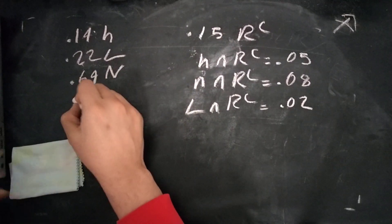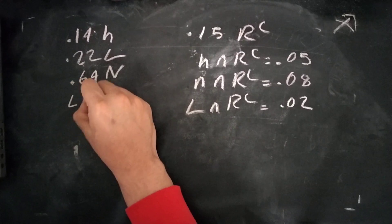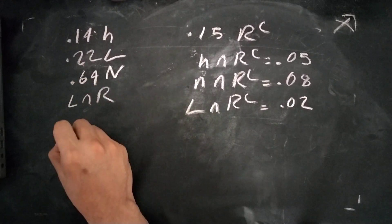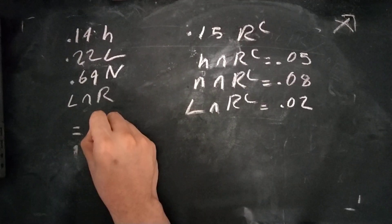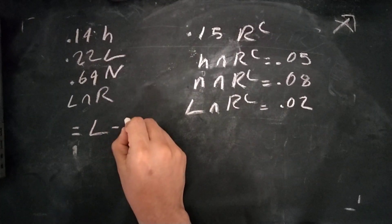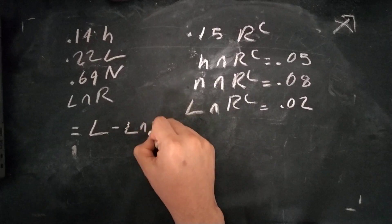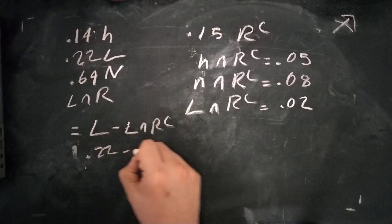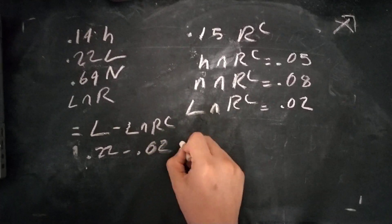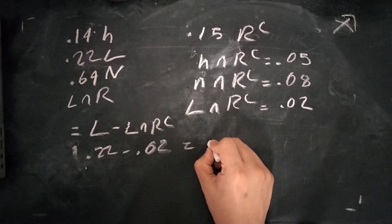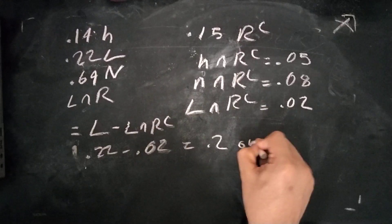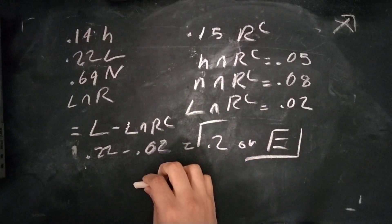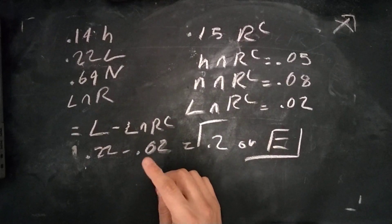Now, since what we're looking for is low blood pressure intersect regular heartbeat, this is equal to the total L minus L intersect R complement. So that's 0.22 minus 0.02, which is 0.20. Answer is E. That's the solution to this problem.